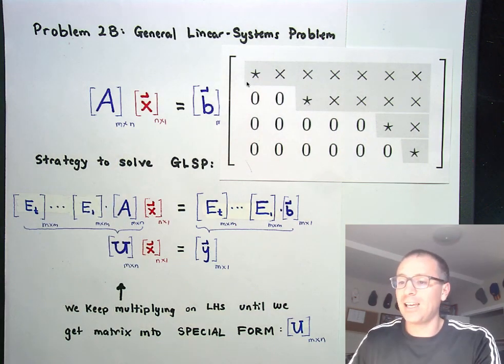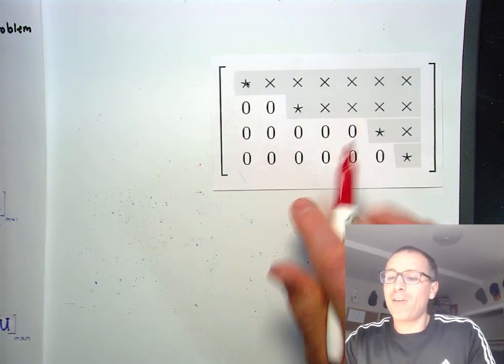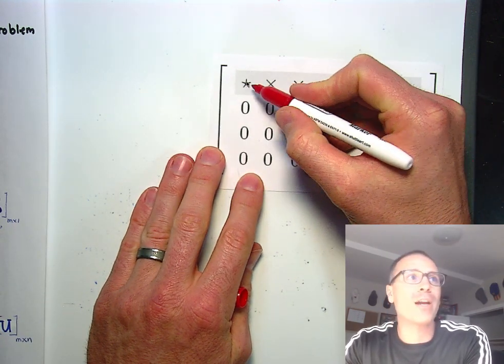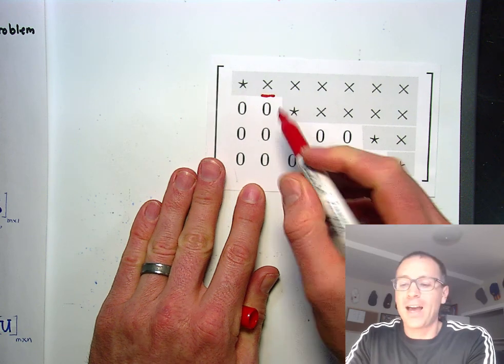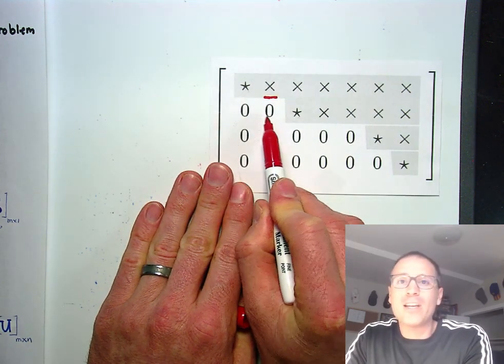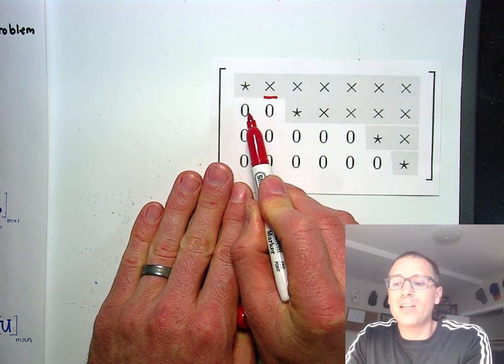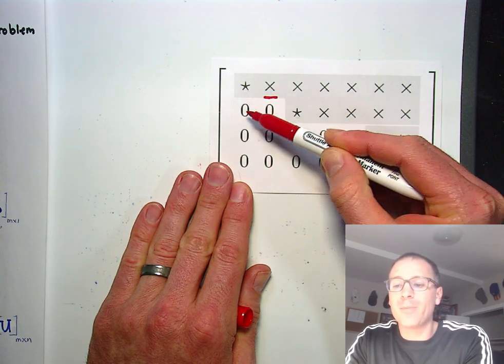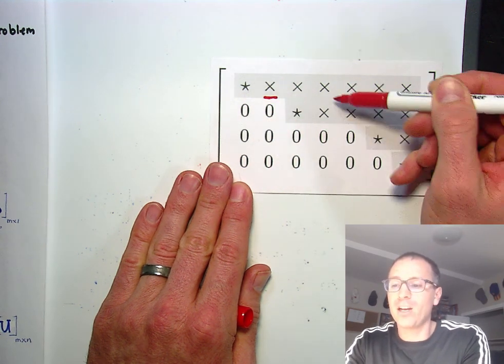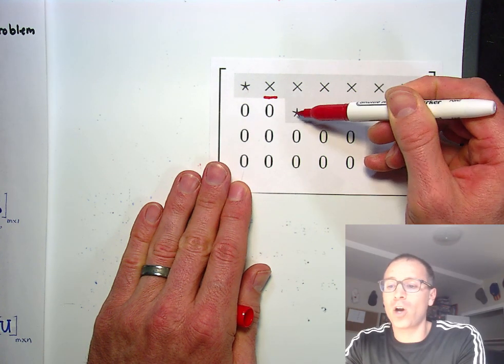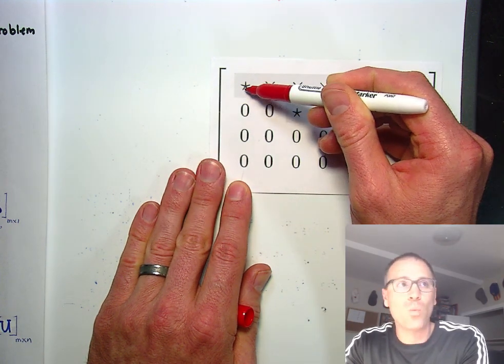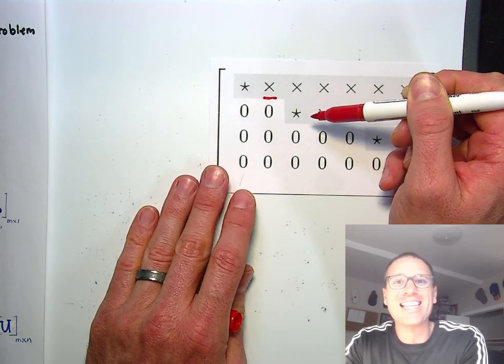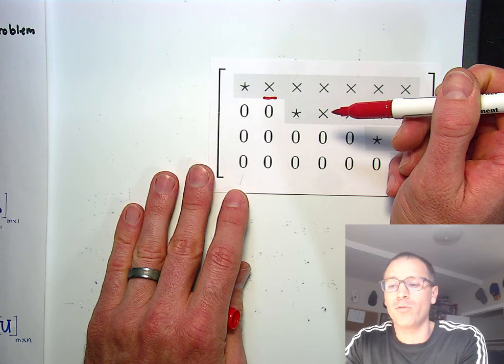The thing that I want to say is when we have a column that is a non-pivot column, in other words the leading entry is not in that, what will end up happening is there is a linear dependence between these two columns. In other words column two is linearly dependent on column one. Here we see that column four is linearly dependent on columns three and one since the ones with stars are the ones that we're going to call linearly independent.